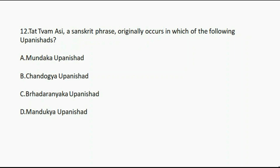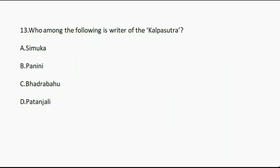Question number twelve: The Sanskrit phrase 'Tattvamasi' originally occurs in which of the following Upanishads? Option A: Mundaka Upanishad. Option B: Chandogya Upanishad. Option C: Brihadaranyaka Upanishad. Option D: Mandukya Upanishad. And the correct answer is option B, Chandogya Upanishad.